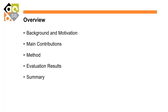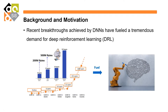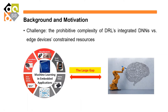First we are going to go over the background and motivation. Nowadays, DNNs have achieved great performance in various fields, creating great interest and demand for deeper reinforcement learning, which has great usage in areas like robotics and IoT. However, a major challenge is the prohibitive complexity of deep reinforcement learning integrated DNNs versus the constrained resources of edge devices and IoT devices in terms of storage and computing.